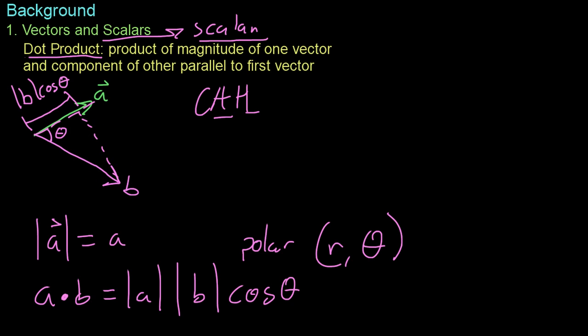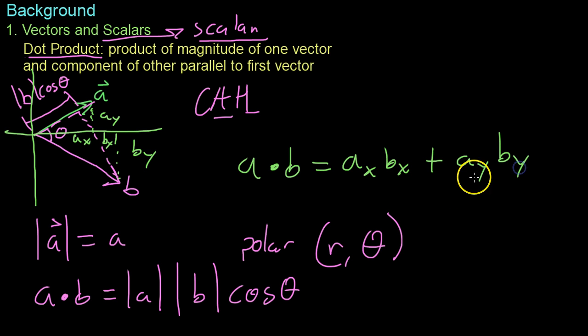Oppositely, what you can do if you're given both of these, let's say these are on the X and Y axis like this, and they each have some component, A of X, and B of X, and A of Y, and B of Y. You'll also find that A dot B, when given in this form, is simply A of X times B of X, plus A of Y times B of Y.